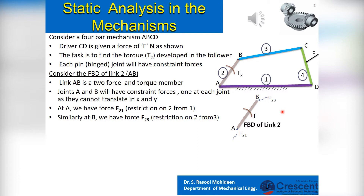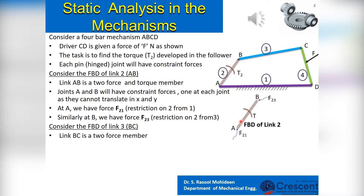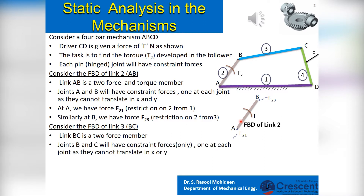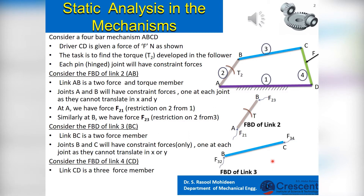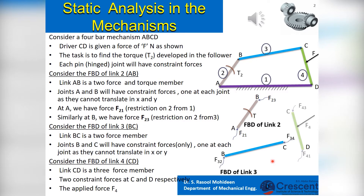Similarly, at B we have force F23, the restriction on link 2 from link 3. Now consider the FBD of link 3, that is link BC. Link BC is a 2-force member. Joints B and C will have constrained forces only, one at each joint, as they cannot translate along X or Y. Consider the FBD of link 4, that is link CD. Link CD is a 3-force member. It has 2 constrained forces at points C and D respectively, and the applied force F4.